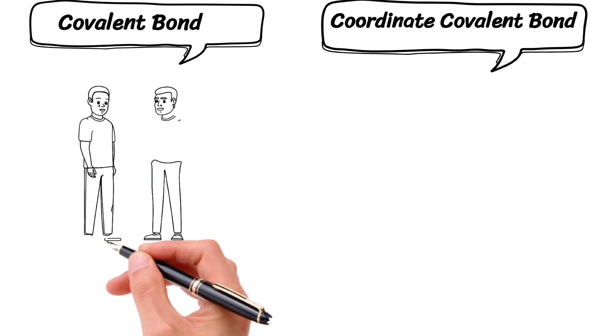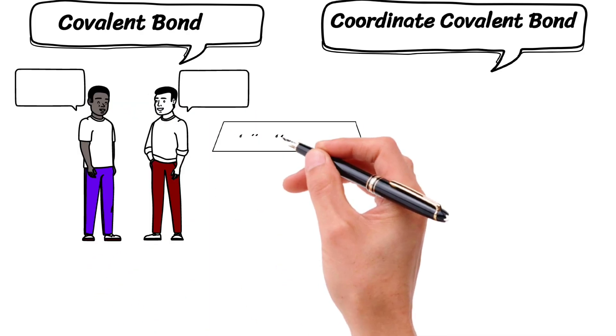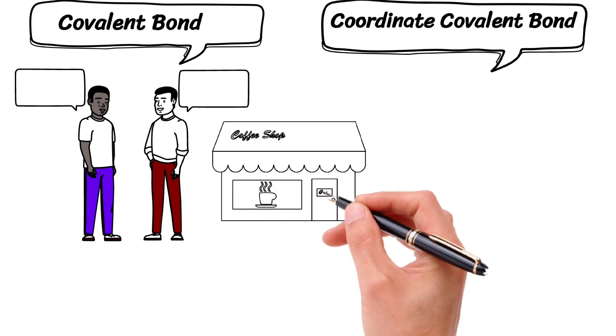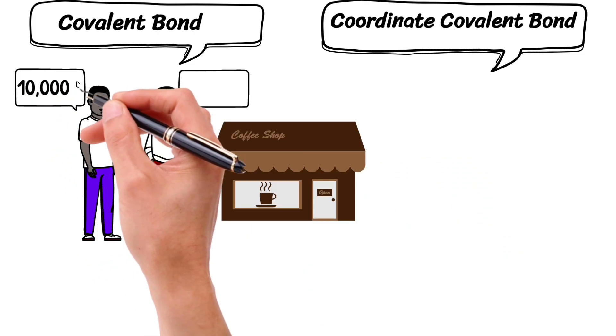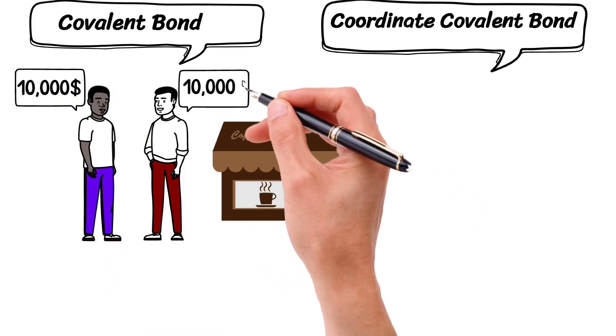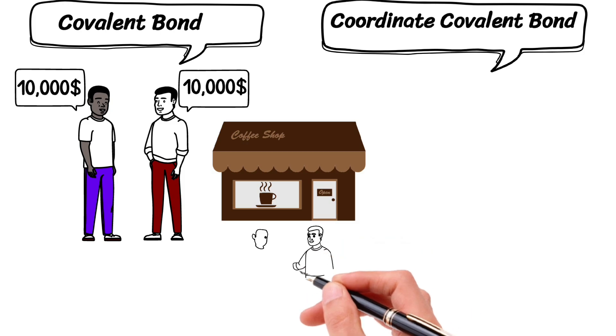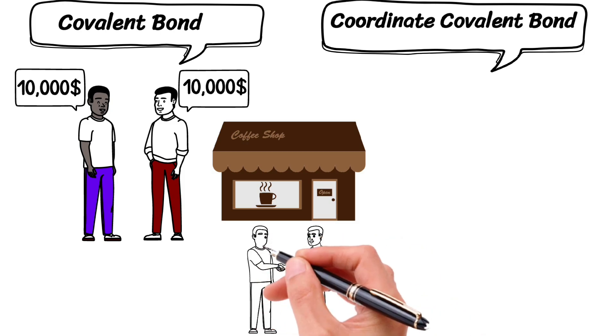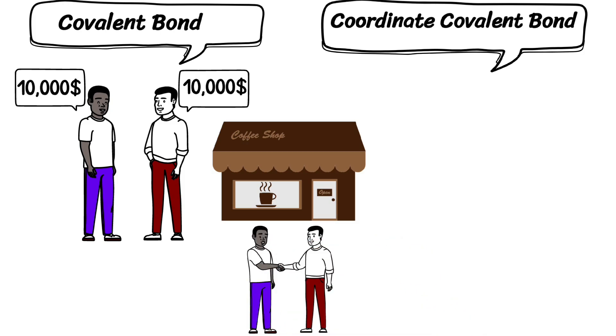Imagine two friends decide to contribute an equal amount of money to start a coffee shop. For example, one friend shared 10,000 and the other also shared 10,000. They both have equal benefits in the business and share the responsibilities equally. In the same way, atom A shares its one electron and atom B also shares one electron. This mutual sharing results in a bond known as covalent bond.